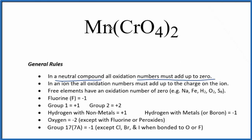We don't know the oxidation state for Mn. It's a transition metal, so we have to look at what it's bonded to. In this case, we have the chromate ion. We actually have two chromate ions.